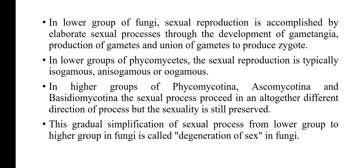In the lower group of Phycomycetes, which is algal fungi, the sexual reproduction is typically isogamous, anisogamous, and oogamous. In higher groups of Phycomycotina, Ascomycotina, and Basidiomycotina, the sexual process proceeds in an altogether different direction, but sexuality is still preserved. This gradual simplification of sexual process from lower group to higher group of fungi is called degeneration of sex, or simplification of sex, in fungi.